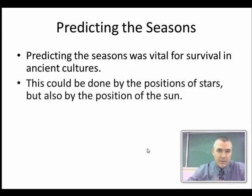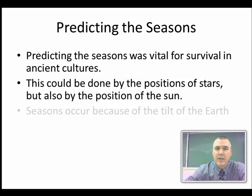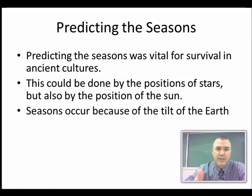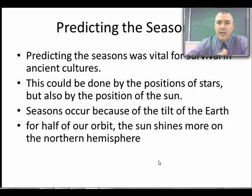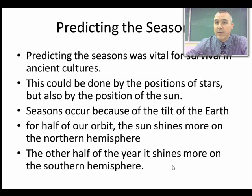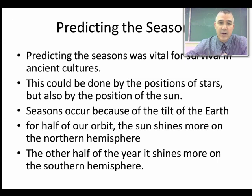It was vital in ancient cultures. It could be done using the position of the stars, but also by the position of the sun. The reason we have seasons is because of the tilt of the earth. Because the earth is tilted, for half of our orbit around the sun, the sun shines more directly on the northern hemisphere, and for the other half of the year it shines more on the southern hemisphere. When it's shining more on the northern hemisphere, it's summer in the north and winter in the southern hemisphere, and vice versa.